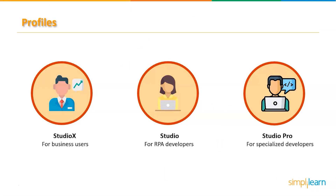Let us look at the different profiles in UiPath: UiPath Studio X, UiPath Studio, and UiPath Studio Pro. UiPath Studio X is for business users — if you are not a developer but want to automate a simple task, it is easy to use Studio X. UiPath Studio is for RPA developers, used to build complex automations run by attended or unattended robots. UiPath Studio Pro is for specialized developers, offering automation with AI, advanced RPA features, testing tools, and sophisticated coding services.